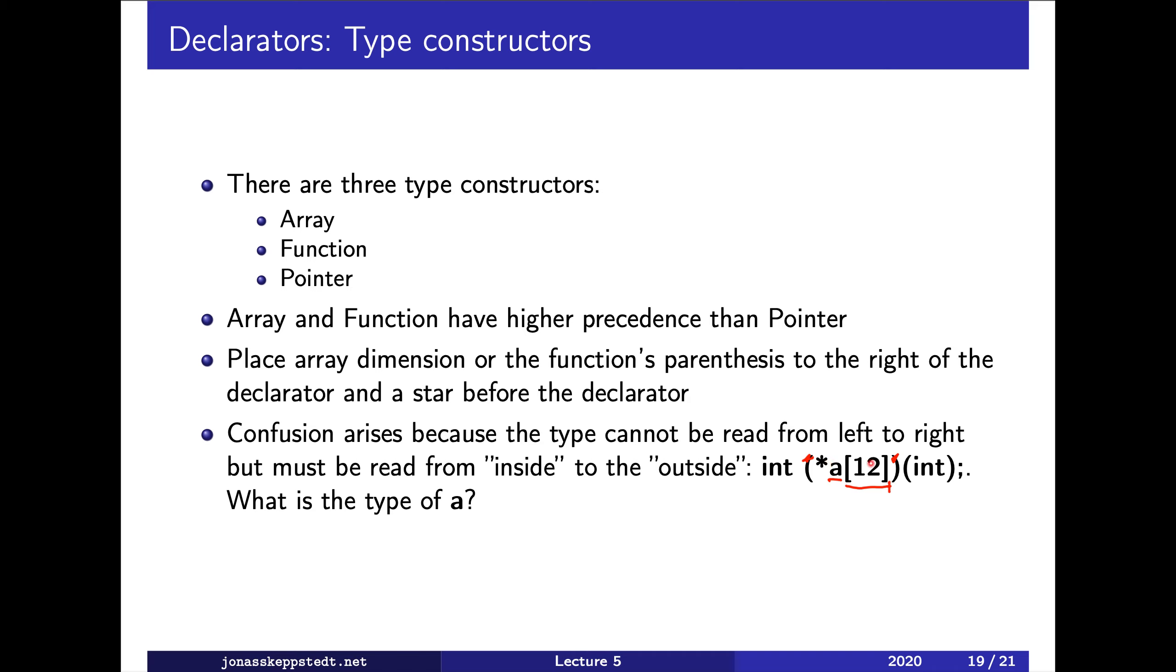And this parenthesis is just because of the grammar rules that we need it. Otherwise, if we wanted to have a pointer, therefore we need the parenthesis. Otherwise, without this parenthesis, we would get that A is an array of functions which return a pointer to an int, but we cannot have an array of functions. We don't want to have an array of functions. We want to have an array of pointers to functions.